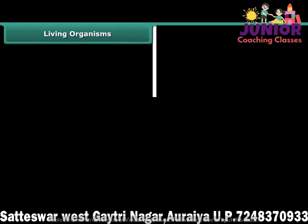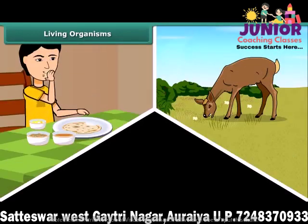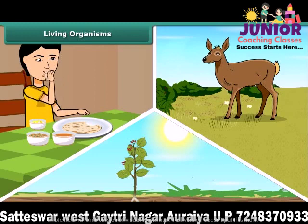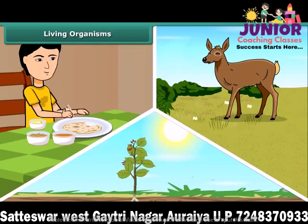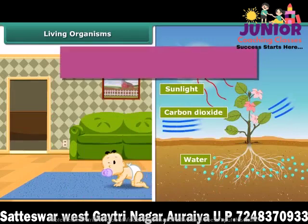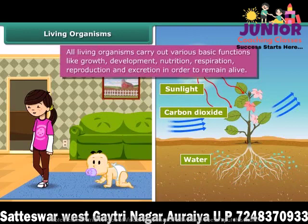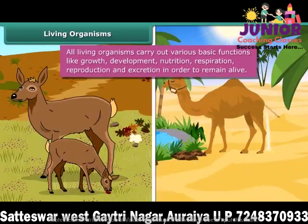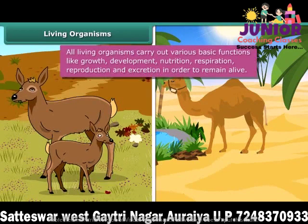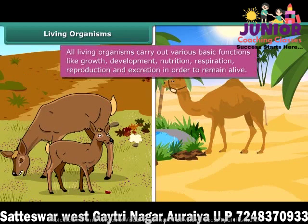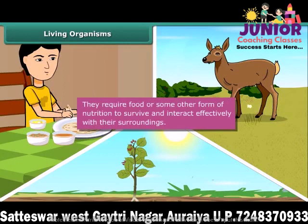Living organisms — human beings, animals, and plants — require food to survive in their surroundings. They show great divergence in their physical appearance, but they all grow and develop during their life cycle. All living organisms carry out various basic functions like growth, development, nutrition, respiration, reproduction, and excretion. In order to remain alive, they require food or some other form of nutrition to survive and interact effectively with their surroundings.